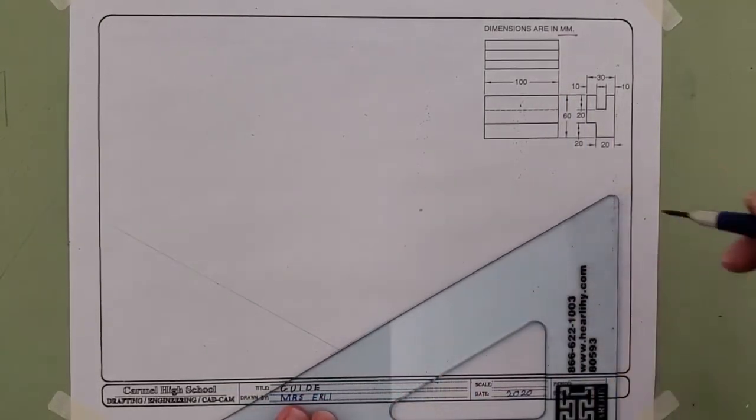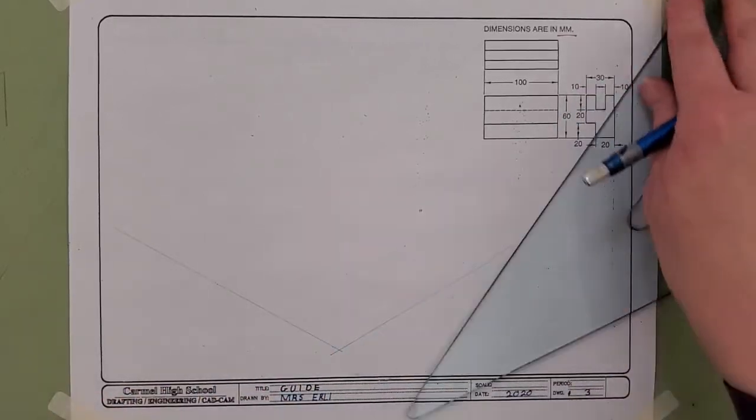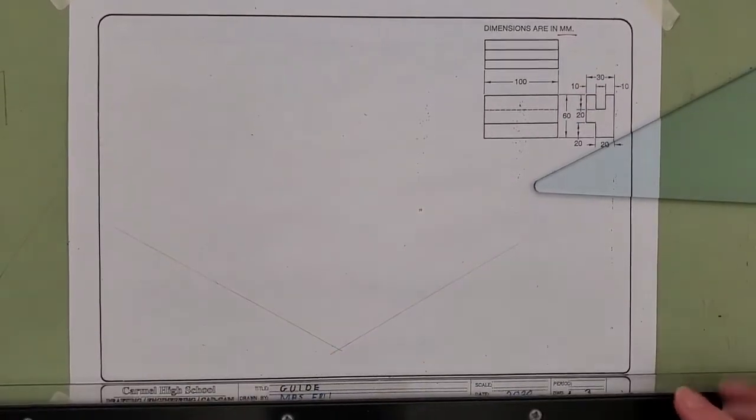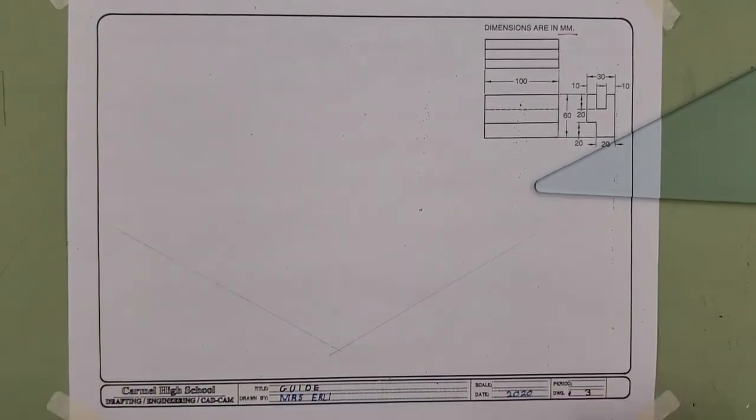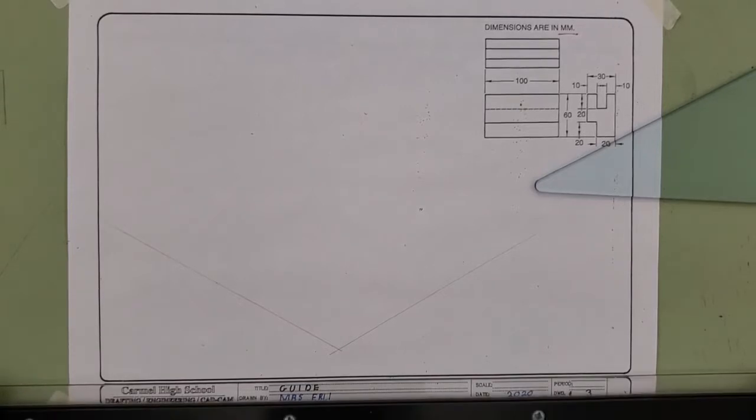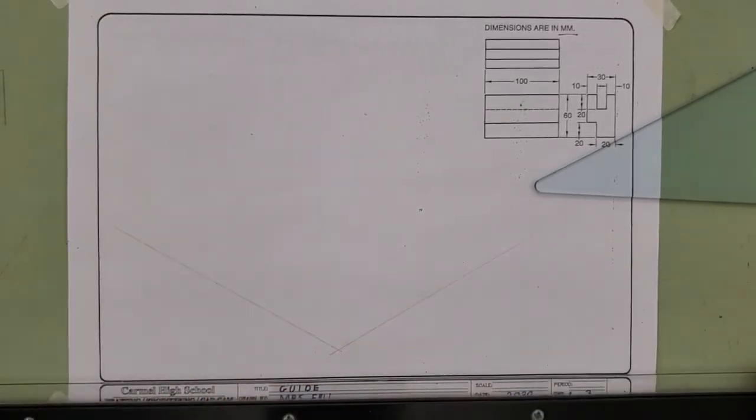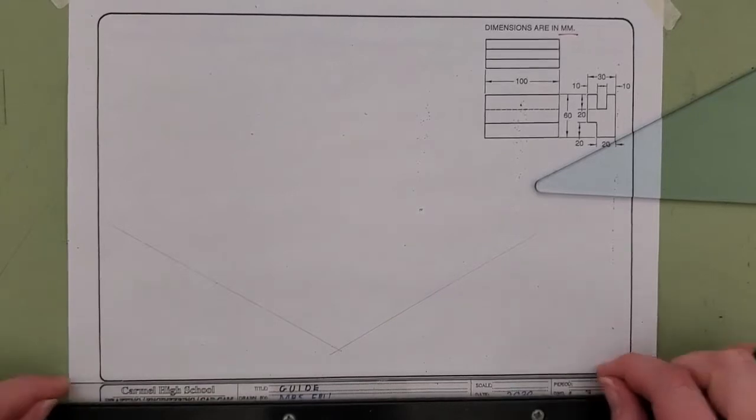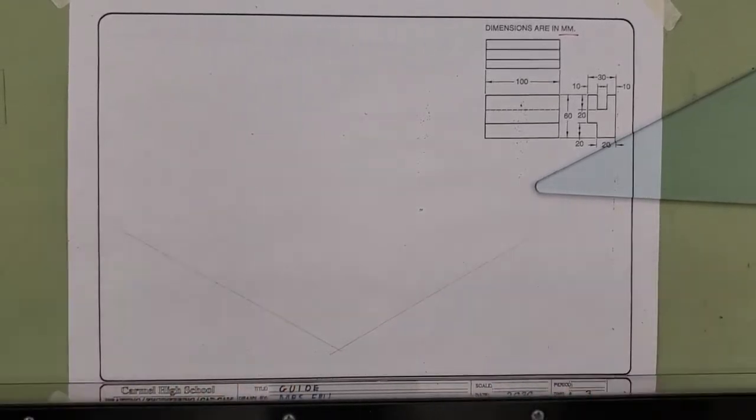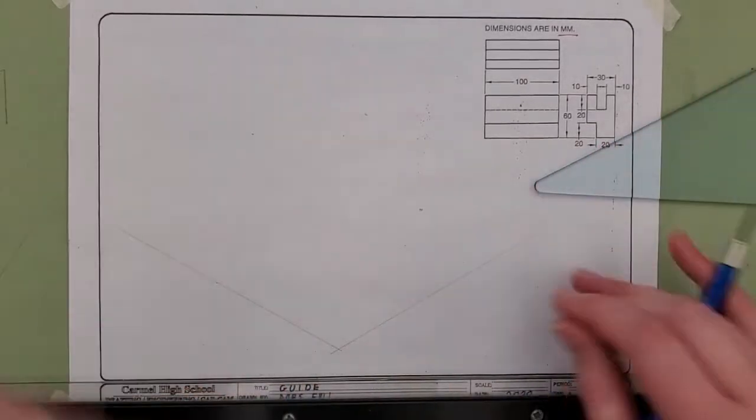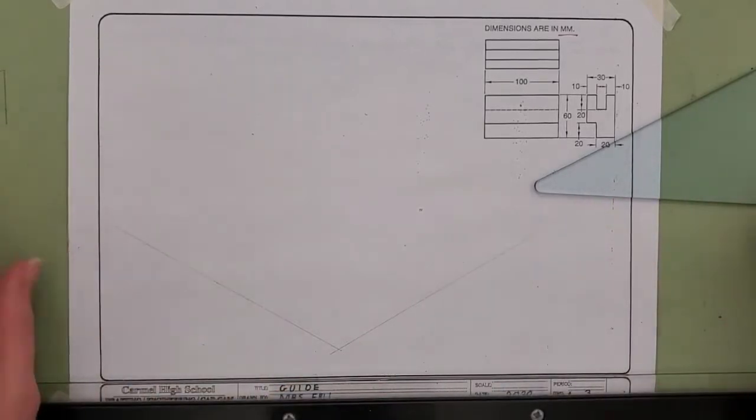So I'm starting off my drawing. First, I lined up my parallel bar with the bottom line of the borders because this one looks like it photocopied a little bit crooked. So if I line up my T-square with the bottom edge of my border line here and tape it down that way, I'm able to keep this at a consistent 30-degree angle.